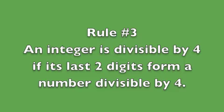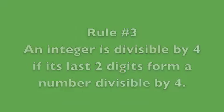Rule number 3: an integer is divisible by 4 if its last two digits form a number divisible by 4. We can see an example of this in 816. 816 is divisible by 4 because 16, the number formed by its last two digits, is divisible by 4.